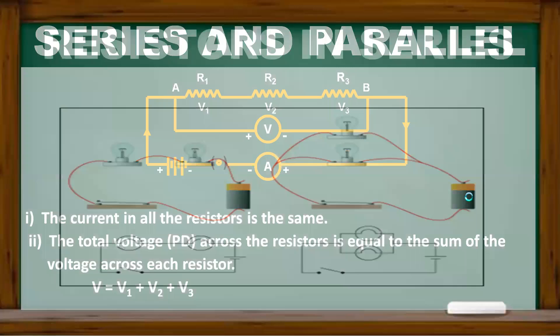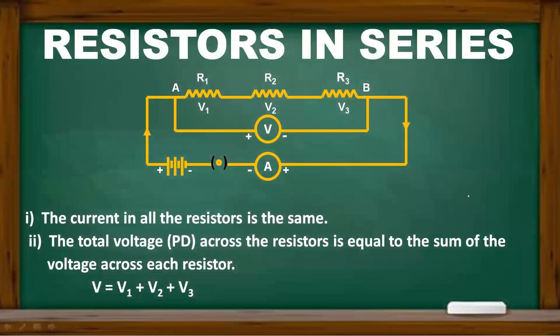The resistors are connected to give an effective resistance. In this case, three resistors are connected end-to-end. The same way, we have the same connection — a series connection.